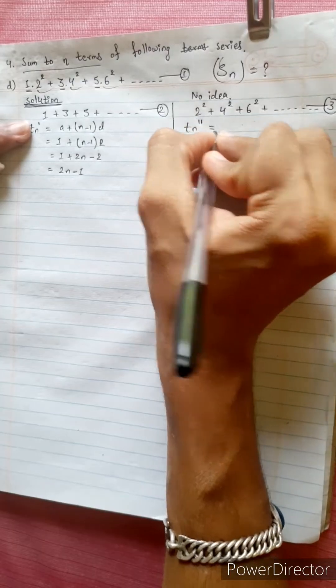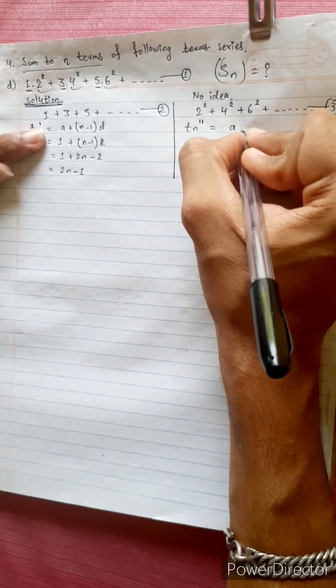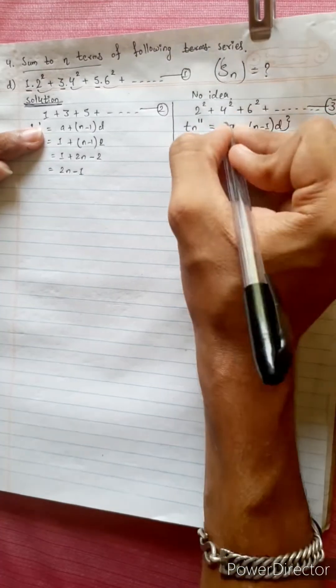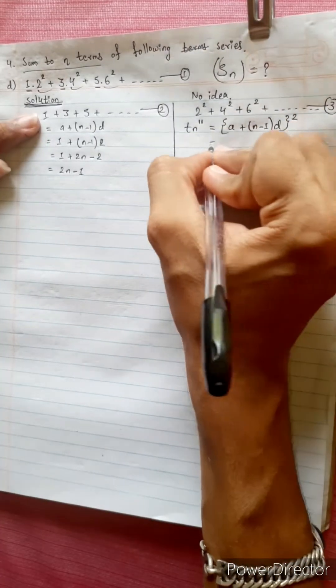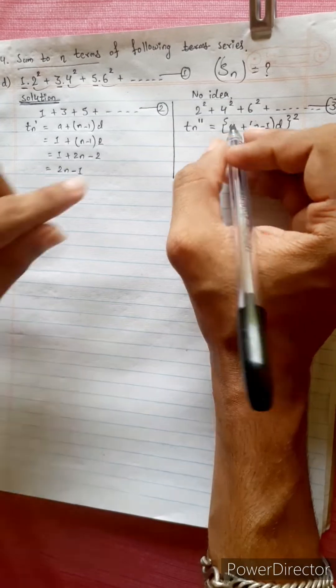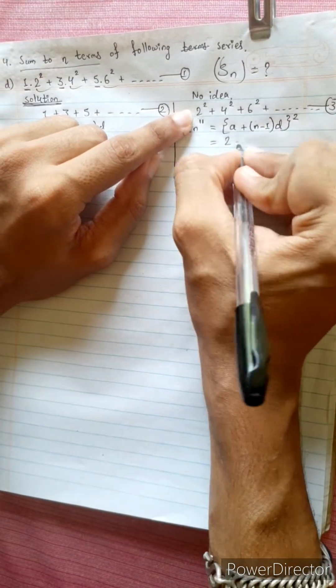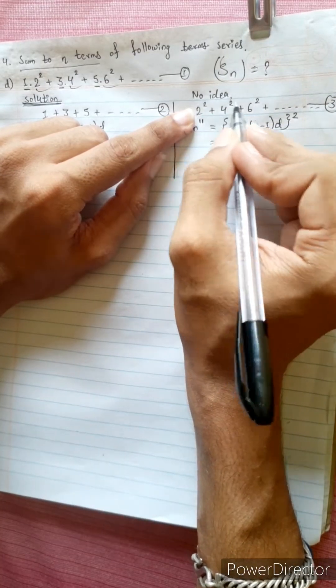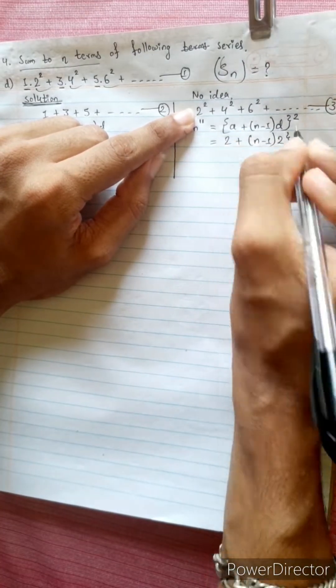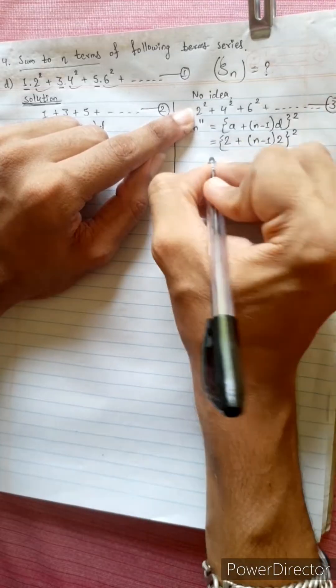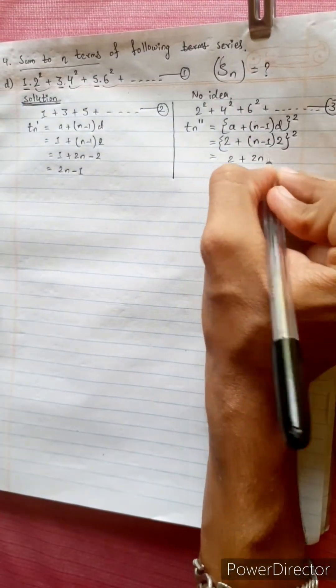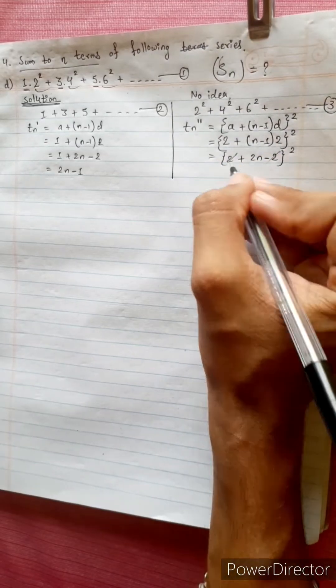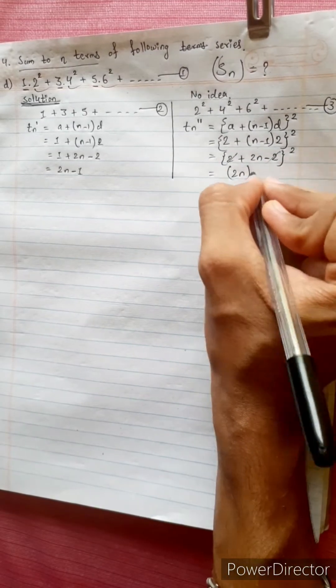Tn double dash equals to a plus n minus 1 times d, whole squared. All terms squared. Equals to first term 2, plus n minus 1 times difference 2, squared. Equals to 2 plus 2n minus 2 squared, which equals 4 square. 2 cancels, equals to 2n whole squared, equals 4n squared.